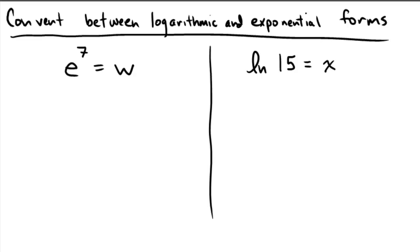So to undo that, we're going to have to perform a logarithm base e. And the special logarithm, the natural logarithm that performs logarithm base e, is represented by ln. So, in other words, we're going to have ln of e to the 7th equals ln of w.